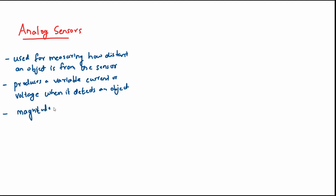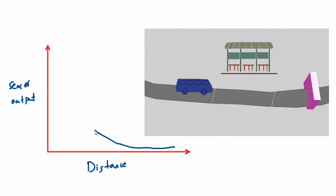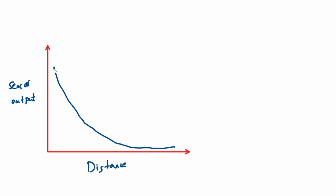This is illustrated with the help of an example. An object is placed ahead of the bus. If an analog sensor is attached to the bus, it will detect the distance in real-time. The sensor output will be an analog signal, and hence the name.